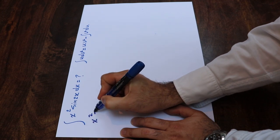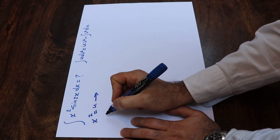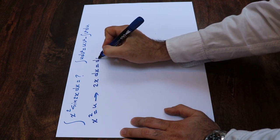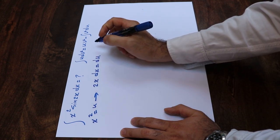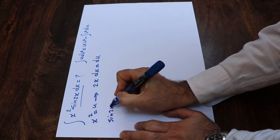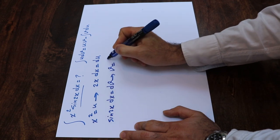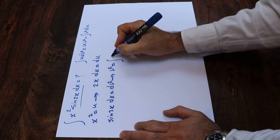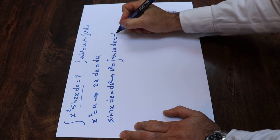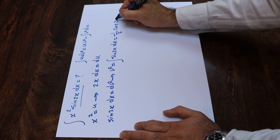So now if you define x² as u, and take the derivative from each side of the equation, you'll get 2x dx is equal to du. And if we define the term sine(2x) dx as dv, then v will be equal to the integral of sine(2x) dx, which equals minus 1/2 cosine(2x).